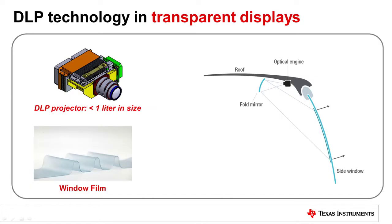Typically, a small projector is mounted to the interior roof surface or other location in the vehicle and projects an image onto the transparent film. The properties of the film have been optimized for transparency and to display text, graphics, or video. Placement of the projector has a direct impact on the size and optical design of the projector and should be taken into account early in the design process.